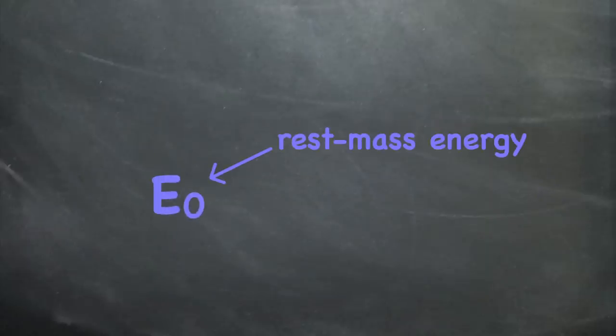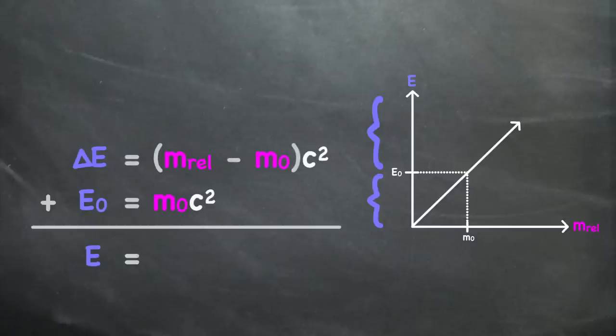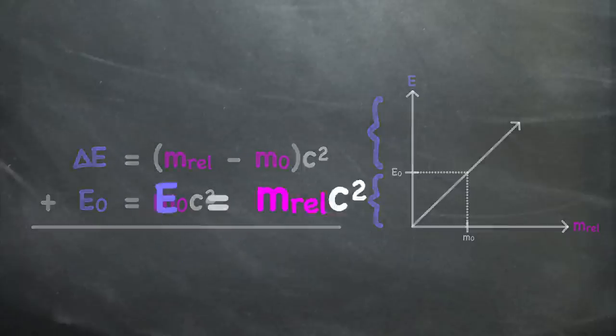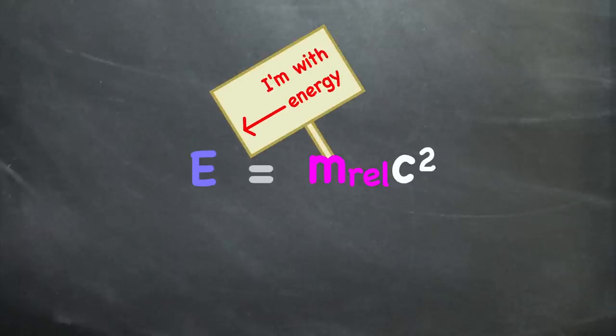And now, the moment we've all been waiting for. The rest mass energy plus the added energy equals the total energy E equals mc squared. This is an object's relativistic mass, the inertia that the object has in our frame of reference. This is the total combined amount of energy it has, in any form. And this is the scaling factor. An object's inertia is just a sign that says, there's energy here.